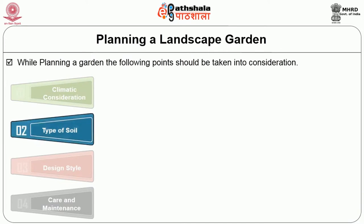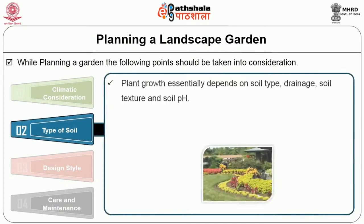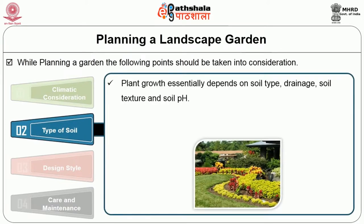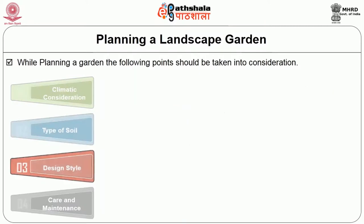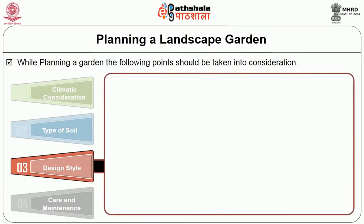Soil consideration: plant growth essentially depends on soil type, drainage, soil texture and soil pH. Therefore, the soil should be surveyed properly before choosing the plants to grow in these areas. Then the third one is design consideration.